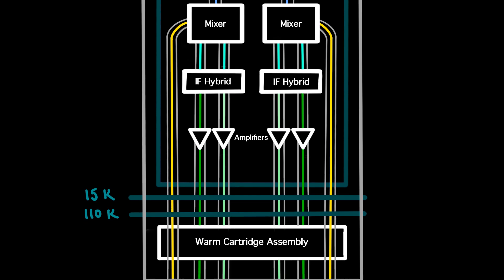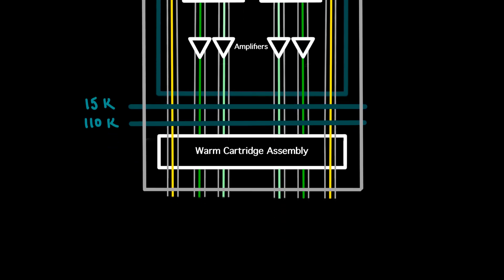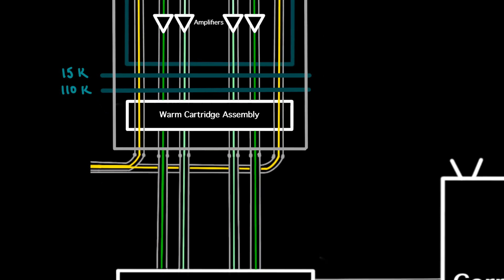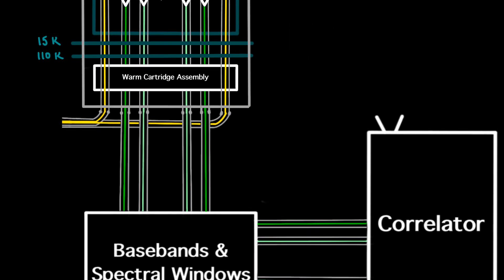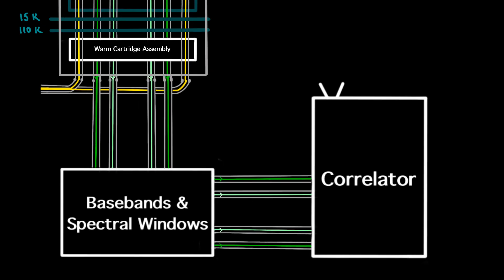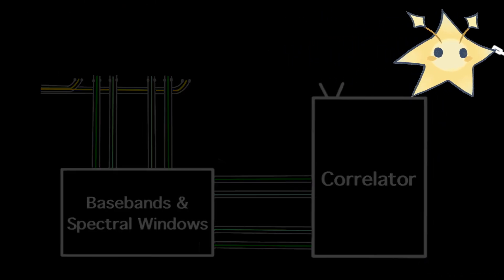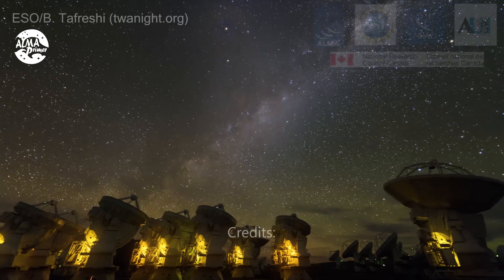The amplified signals then pass through a series of stages to bring them out from the coldest part of the receiver to the rest of the signal processing system, including the correlator. Here, the signals are processed to create basebands and spectral windows. Check out our video on sidebands, basebands, and spectral windows for more about how that happens.